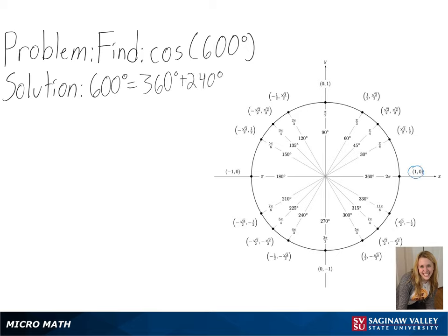Starting at (1, 0) and moving counterclockwise, we will go one full rotation around our circle for 360 degrees, and then continue for another 240 degrees.